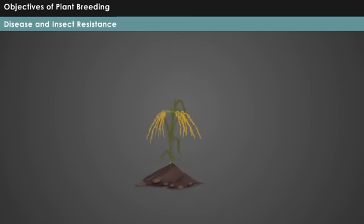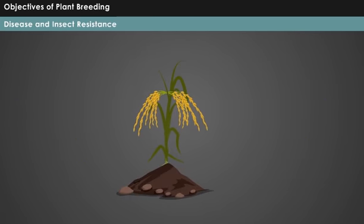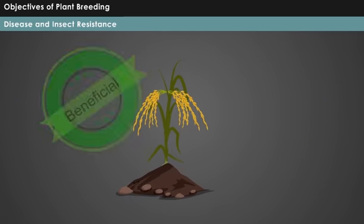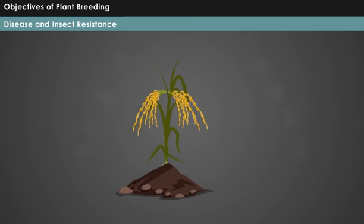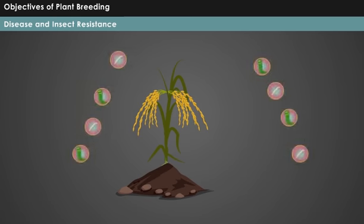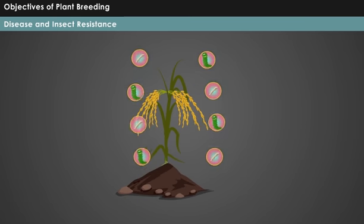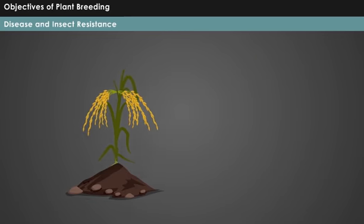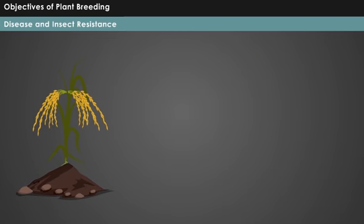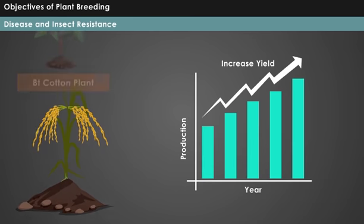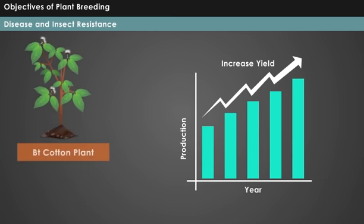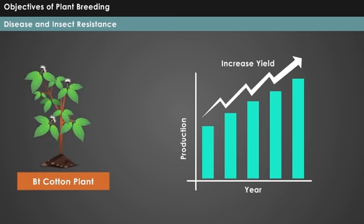Disease and insect resistance: Inbuilt resistance of plants is highly beneficial and the cheapest means to raise crops. Moreover, it serves as an environmentally safe method for disease and insect control. These plant varieties help in increasing production and also stabilize it. BT cotton is the best example of inbuilt resistance plants.